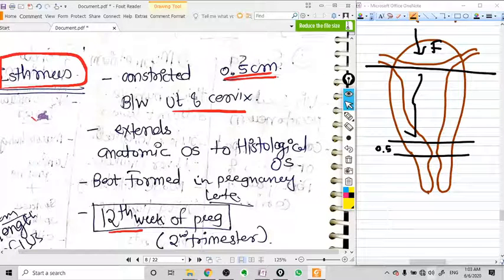For definition, we take it as a 0.5 centimeter part between the uterus proper and the cervix. This is called isthmus. What actually happens here is the isthmus part is a junction of the cervix and uterus. The proper uterus and cervix have totally different kinds of composition.